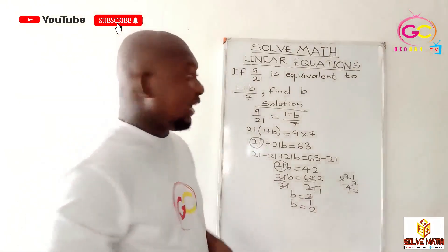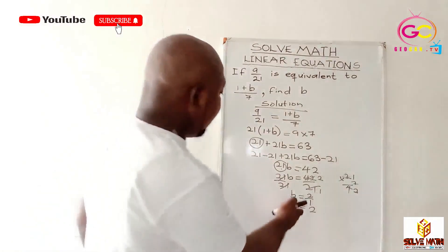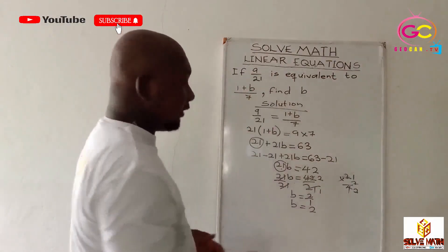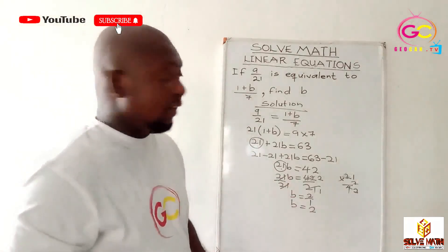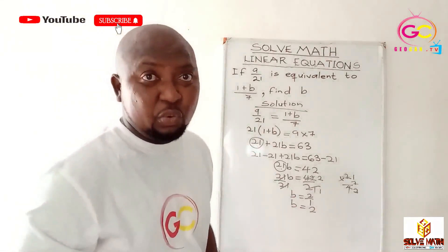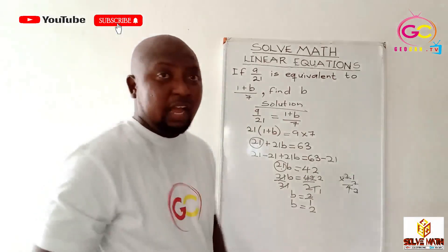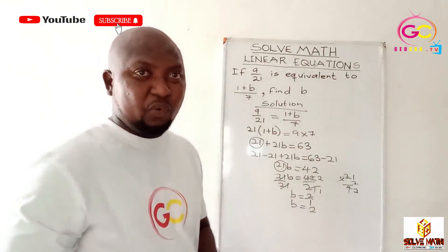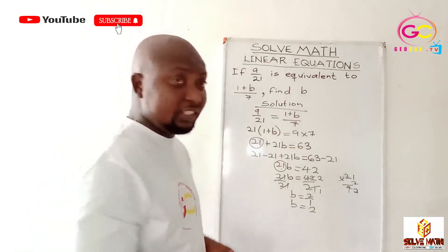Now, we can check our answer. You know how to check the answer. It's easy as A, B, C, D. You go back to the equation, right? And wherever you find B, you're fixing 2 over there. And if the right-hand side is equal to the left-hand side, you are correct. So with this particular one, I will urge you to check it for yourself and see whether it's correct or not.